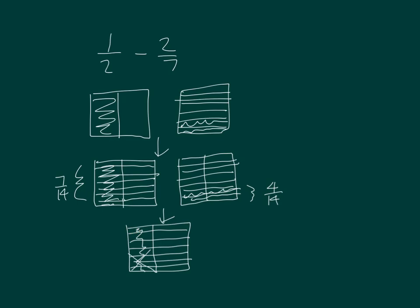1, 2, and 3. Again, that was 7 fourteenths minus 4 fourteenths, which equaled 3 fourteenths.